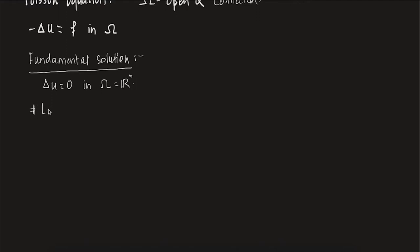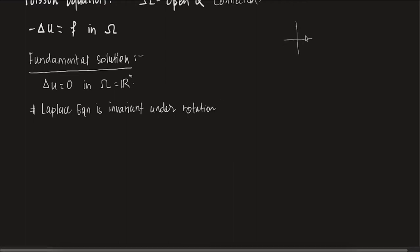The Laplace equation is invariant — not just under translation, but also under rotation. What does that mean? It means that if you have a coordinate axis and you rotate it through some angle theta, and define U in the new coordinate axis, that gives you V.